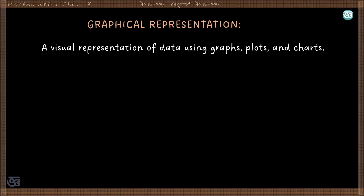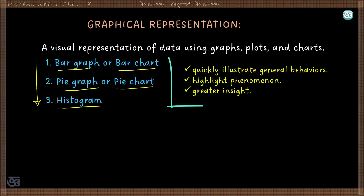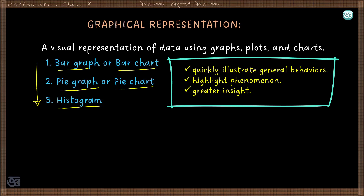Graphical representation is a visual representation of data using graphs, plots and charts. Today we will discuss only these three types: bar graph or bar chart, pie graph or pie chart, and the histogram. The advantages of graphical representation are that it quickly illustrates the general behaviors of the data, highlights the phenomenon of the data, and gives greater insight into the trend or nature of the data.